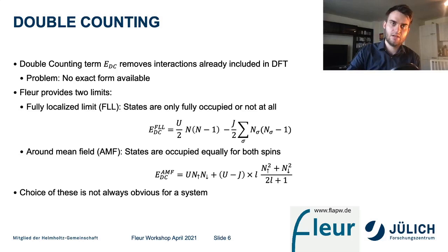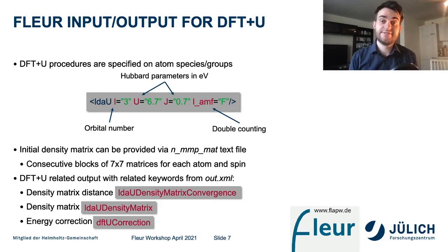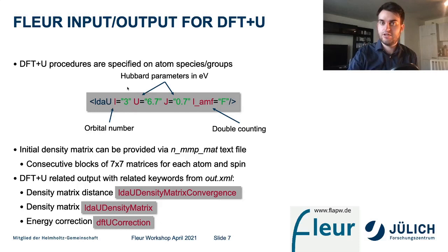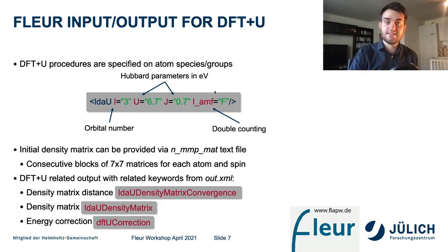Let's look at how to concretely do an LDA plus U calculation in FLEUR. We simply add a new tag specifying the orbital and interactions to include, on the atom we want to treat. This includes the orbital number — in this case 3 for the F orbital — the two Hubbard parameters in electron volts, and the choice of double counting. Setting this switch means we use the fully localized double counting, not the around-mean-field double counting.